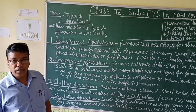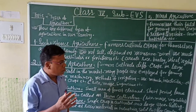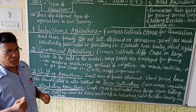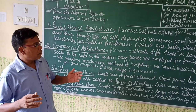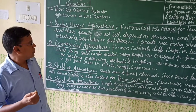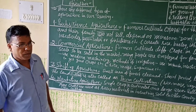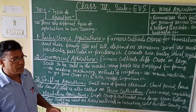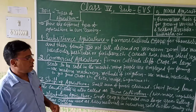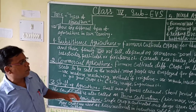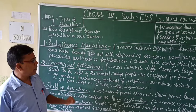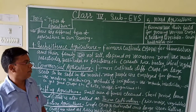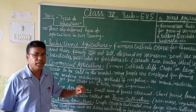They do not sell in the market, and that is why they depend on monsoon. They don't use the irrigation system and they don't use much insecticide, pesticide, or fertilizer, because they cultivate the crops for their family or themselves. In this type of agriculture, farmers mainly cultivate cereal, rice, barley, wheat, and vegetable crops.